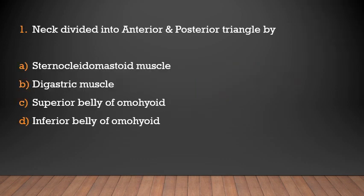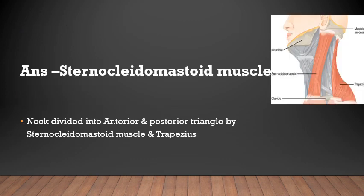The neck is divided into anterior and posterior triangles by the sternocleidomastoid muscle and trapezius muscle. The dividing structures also include the digastric muscle, superior belly of omohyoid, and inferior belly of omohyoid.